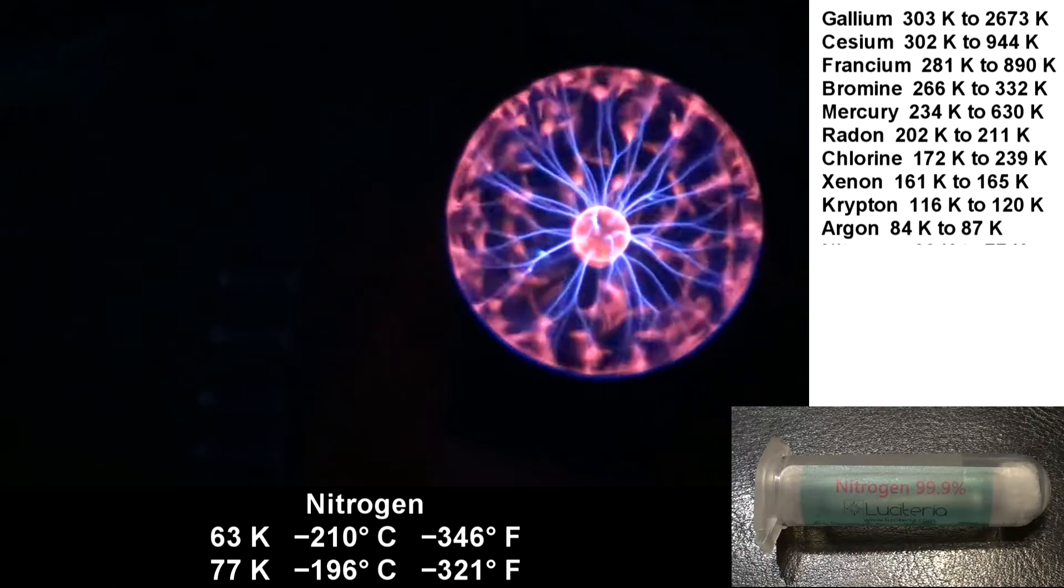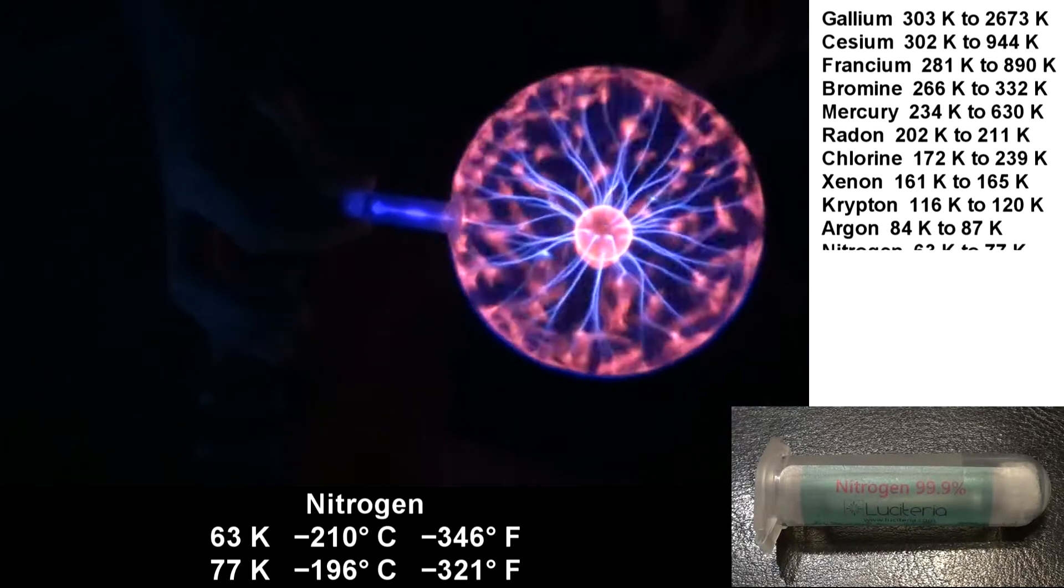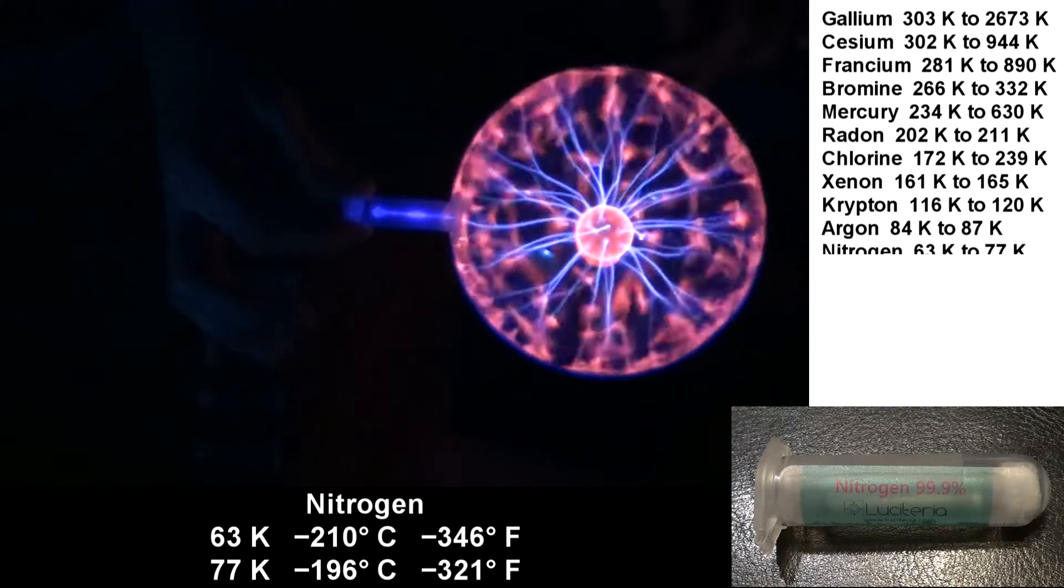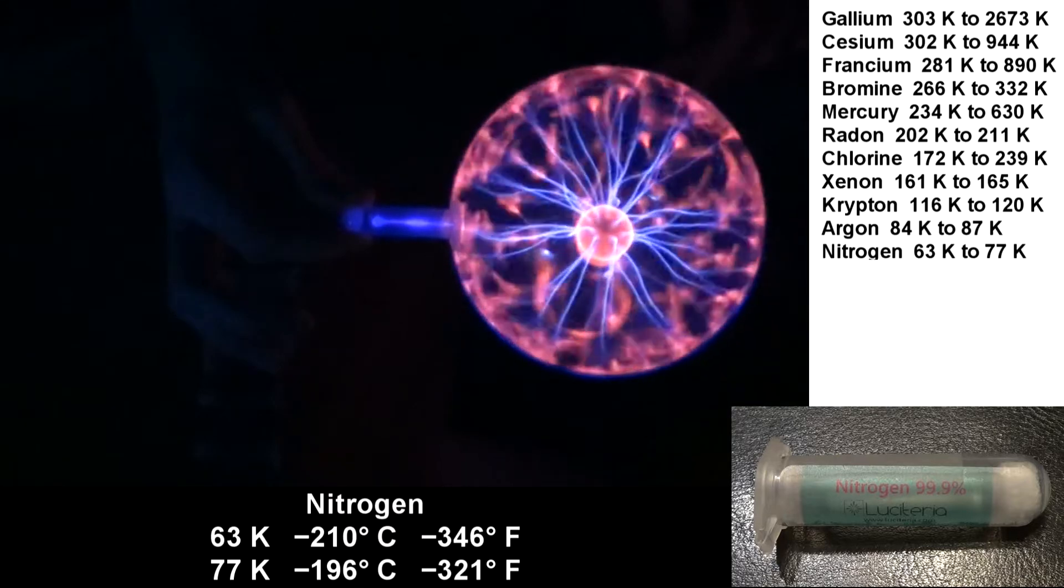Nitrogen needs a little more extra care to get it to light up. Let me see if I can get it going. Ooh, there we go. It's a liquid from 63 Kelvin to 77 Kelvin. I'm sure you've seen liquid nitrogen at some point.